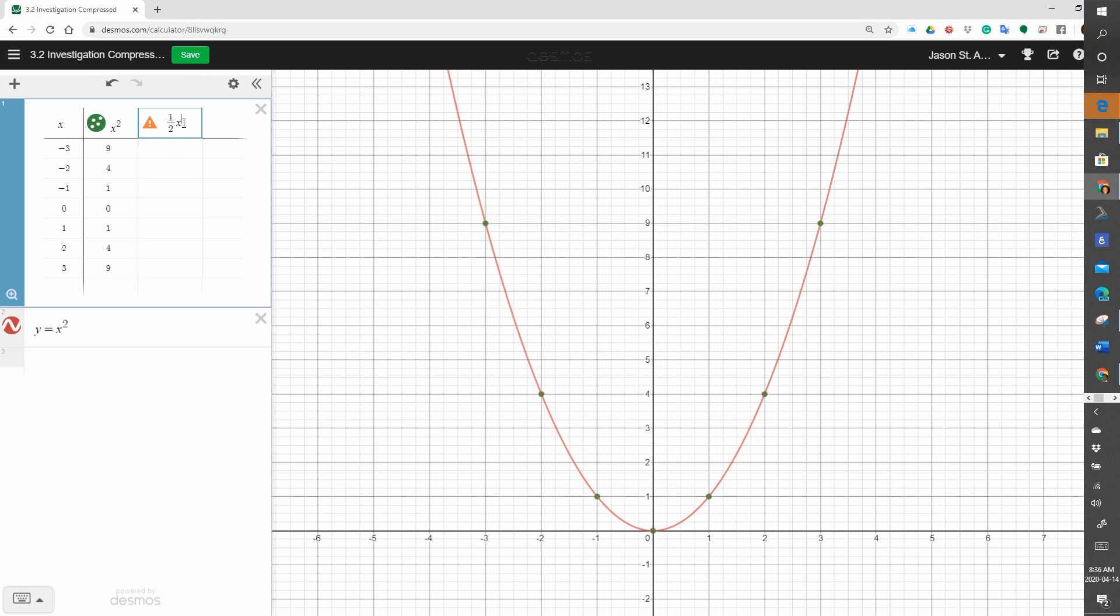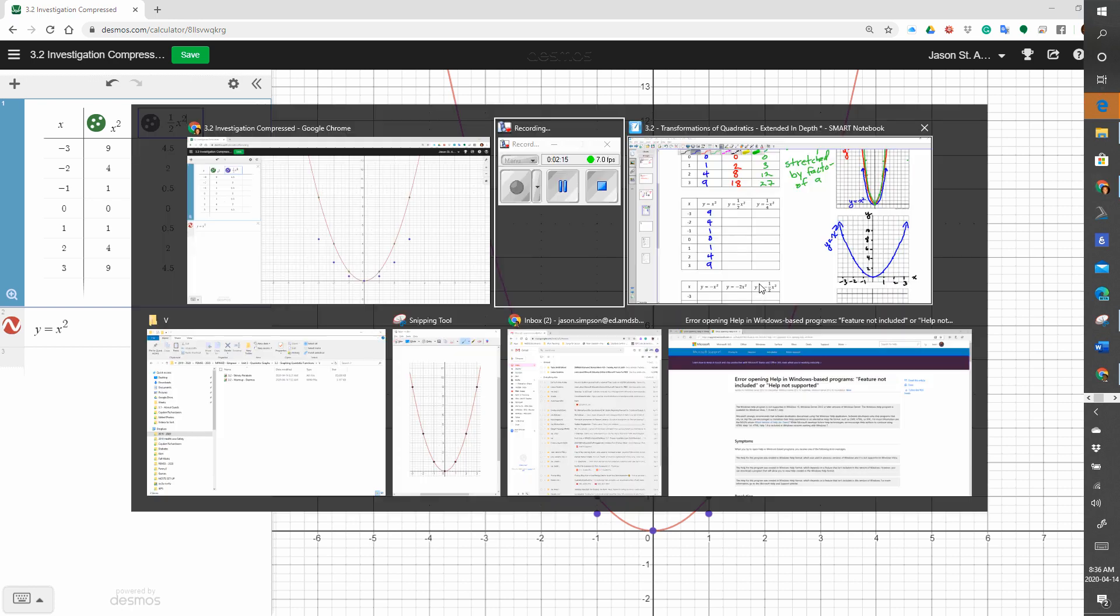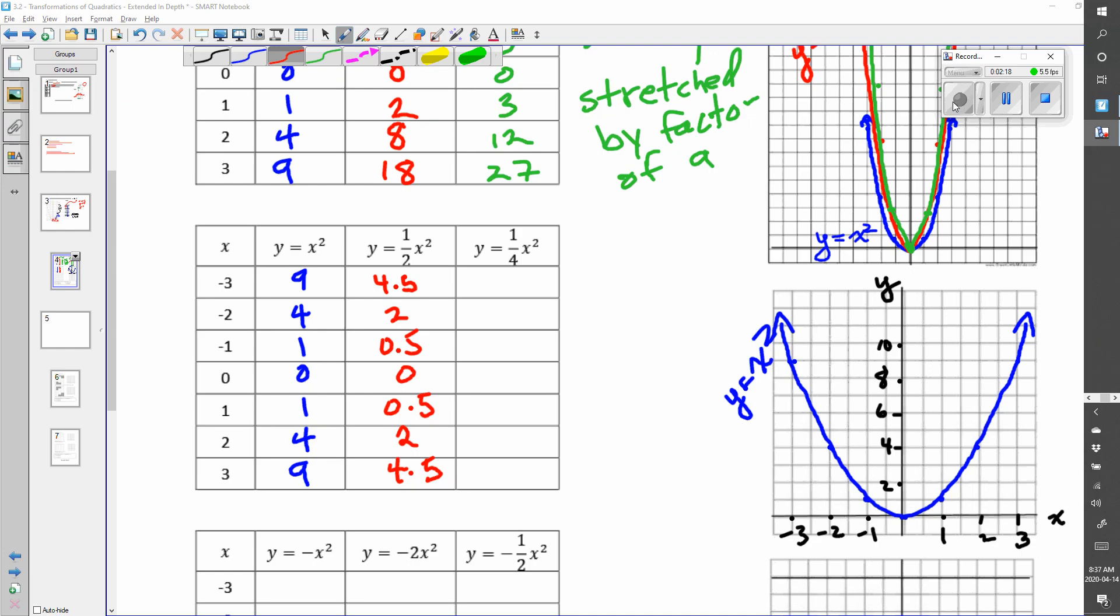1 half x squared. We get 4 and a half to these points here. Copy them into your chart. So, these are the points that we've got. And if you just look at the y values that have been changed from x squared to 1 half x squared, we literally chopped the heights by 2. Or we just multiplied by 0.5. So, 9 goes to 4.5, 4 goes to 2, and then 1 goes to 0.5. 0 stays as 0. And so on.